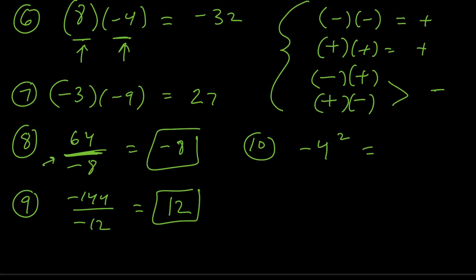For number 10, negative 4 squared. This involves negative numbers but also adds exponents. Remember PEMDAS — parentheses, exponents, multiplication, division, addition, subtraction. The first thing to do is handle the exponent: 4 squared is 16. But then we're multiplying by the negative on the outside, giving us negative 16. Follow the order of operations: exponents first, then the multiplication. So for number 10, you should get negative 16.